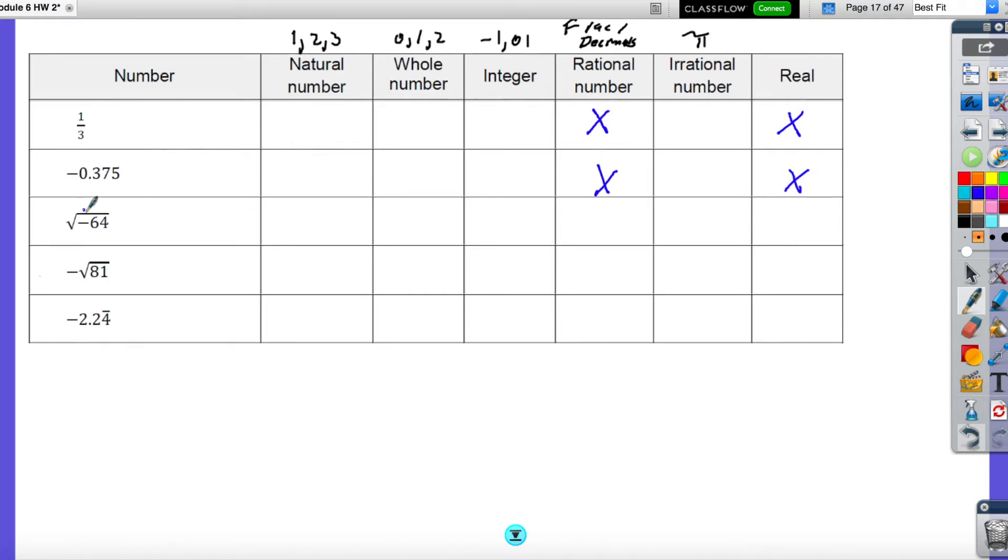Now this one's interesting. You cannot take a square root of a negative number. So therefore, this is all blank. It is none of those. That's a non-existent number.